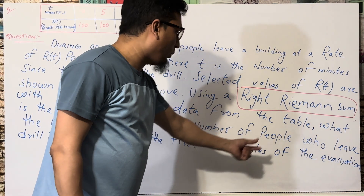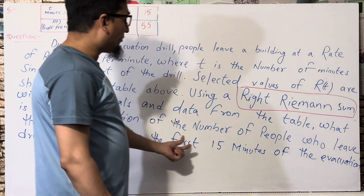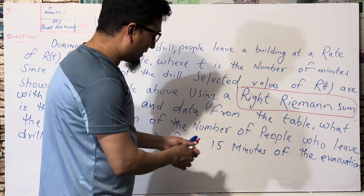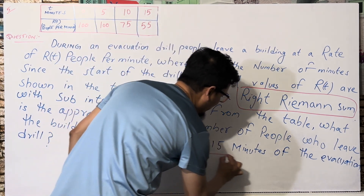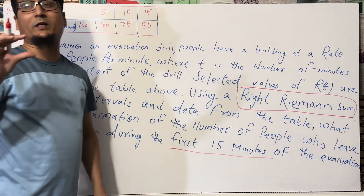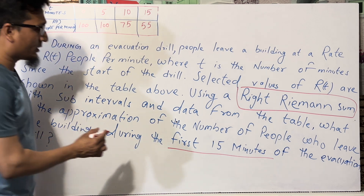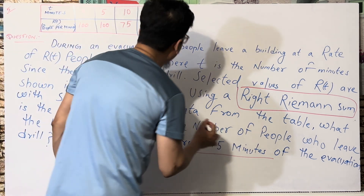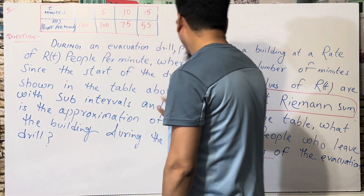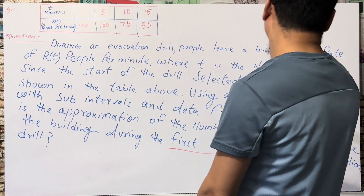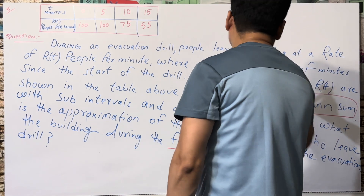The question asks: can you tell the approximation of the number of people who leave the building during the first 15 minutes? This is also very important - just find the keywords of the question: the first 15 minutes. Okay, what you have to see here is that you need to make three intervals.